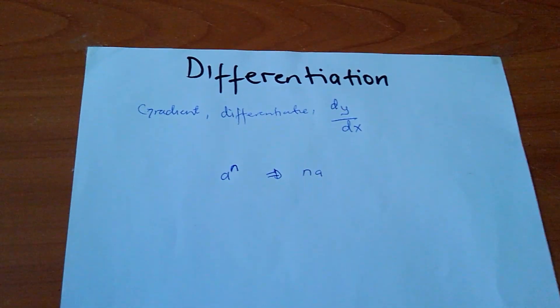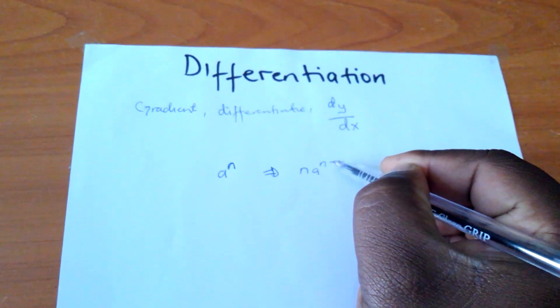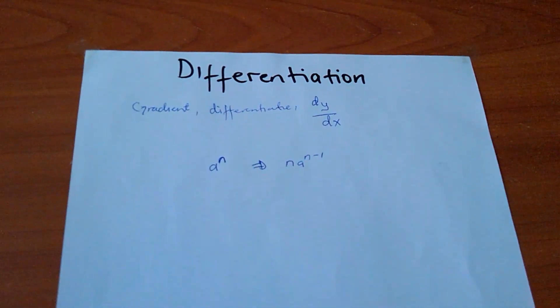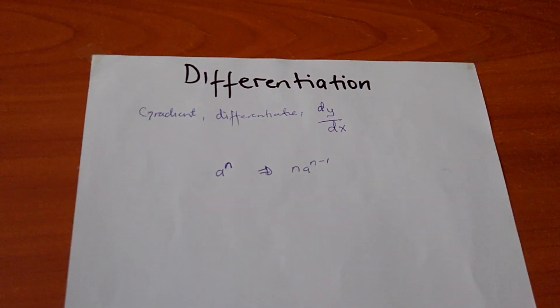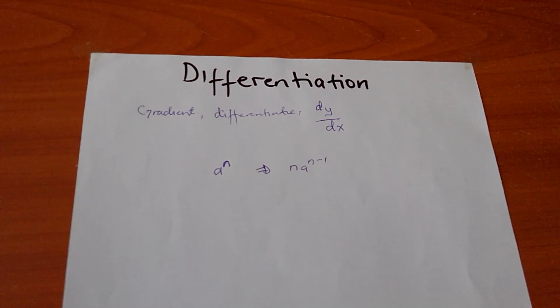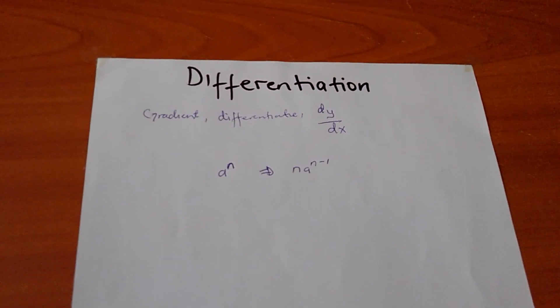After multiplying, I will subtract 1 from n, the power, taking n to be the power. So, if I differentiate a to power n, I will be able to get n times a to power n minus 1. Then, I am going to elaborate more on what I mean.